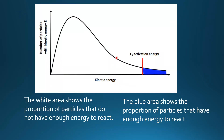On this distribution curve we have this red arrow which is the activation energy. The activation energy is the minimum energy that particles must have for a chemical reaction to occur. The large white area shows the proportion of particles that do not have enough energy to react — they have energy less than the activation energy. The blue area here shows the proportion of particles that have enough energy to react; they have kinetic energy greater than the activation energy.